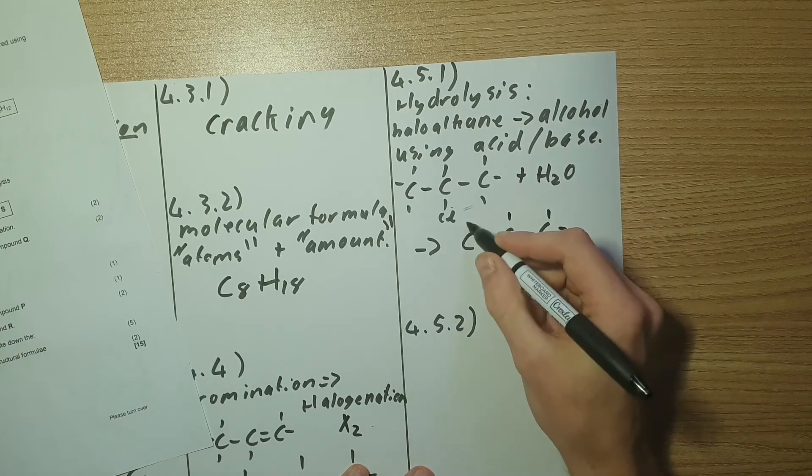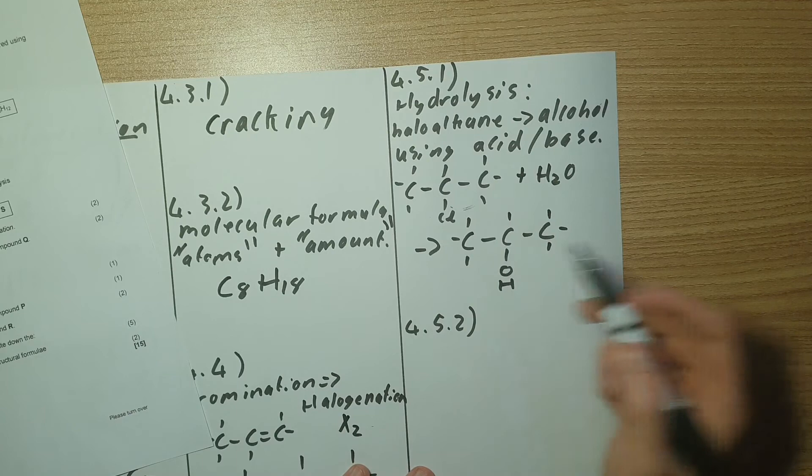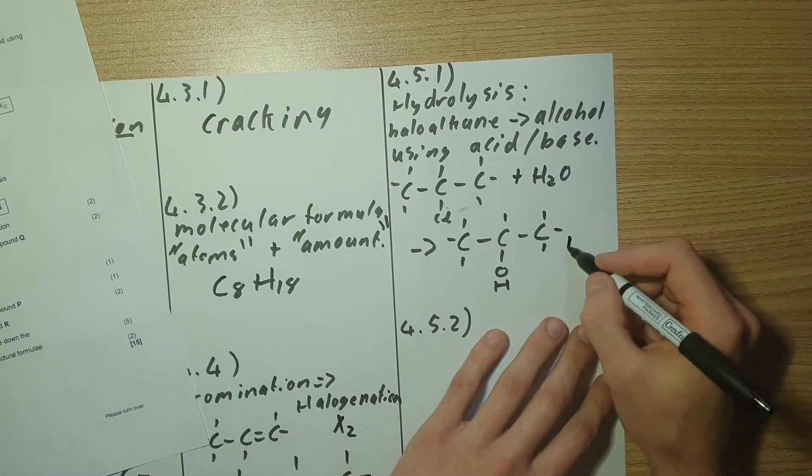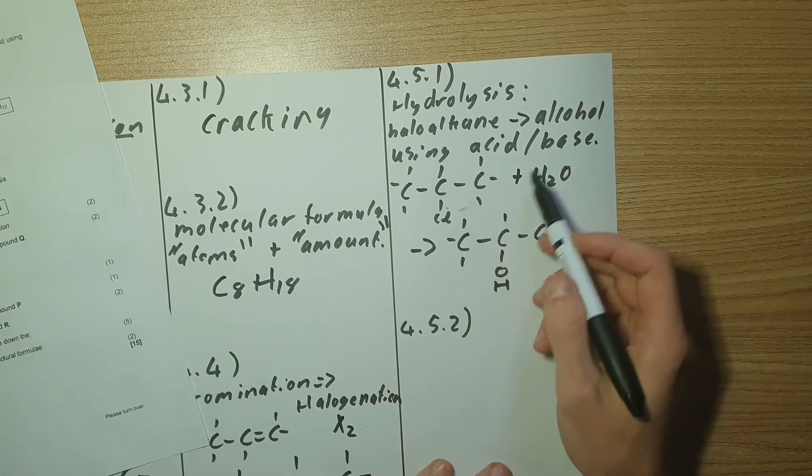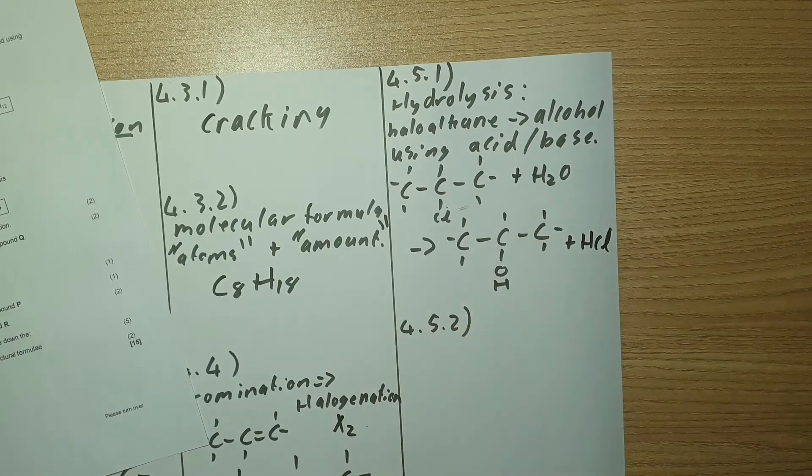Note that it's a secondary alcohol because it's attached to the middle carbon. And then what are we going to have left? Well we've taken out the Cl plus there's an H there so we'll have HCl remaining.